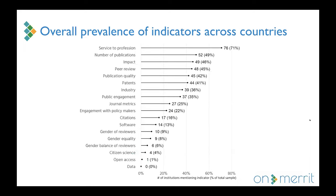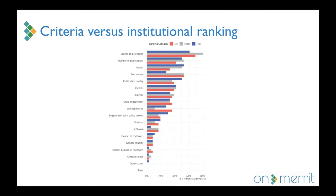From the results, we can see that traditional indicators — service to the profession, number of publications, and impact — are more popular. Alternative indicators such as citizen science, open access, and open data are not that common. We divided institutions into three tiers using the Times Higher Education World University Rankings — low, middle, and high tier — and from this graph we can conclude that there are no differences in ranking and it does not affect the presence or absence of those indicators.